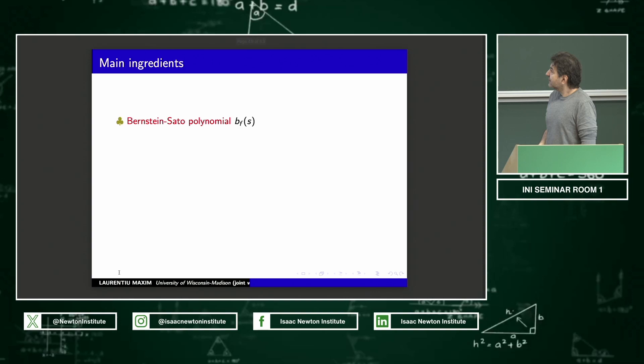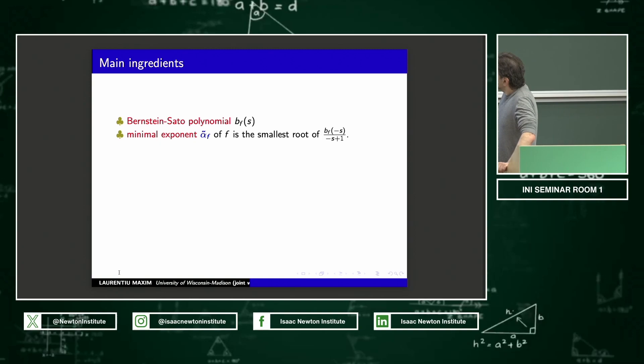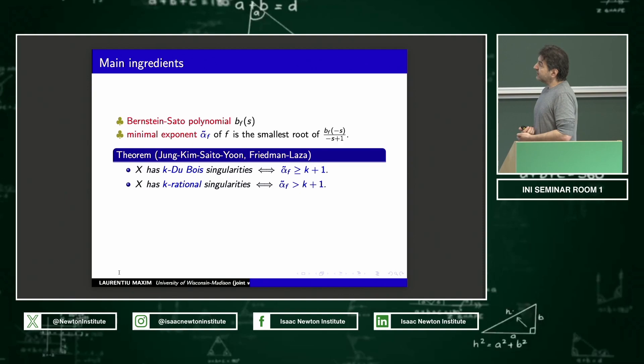What's behind this? As I said, there are some ingredients. One is the Bernstein-Sato polynomial, which is something coming from D modules as expected. Then there is this minimal exponent. This is the smallest root. There is a nice relation between the log canonical threshold and the minimal exponent, but let me not mention that here. Anyways, this is one of these roots of the Bernstein-Sato, the normalized Bernstein-Sato polynomial. The key point here is that this minimal exponent was used by Saito and other people to actually characterize Du Bois and rationality at the higher level. So K Du Bois is equivalent to this minimal exponent being at least K plus one. And K rational is similarly characterized by strictly greater than K plus one.